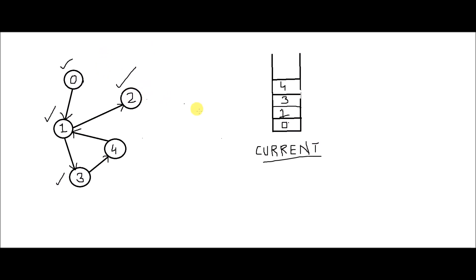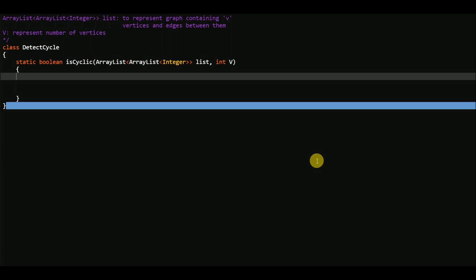I'll be using two arrays: one to keep track of visited nodes and the other to keep track of the current recursive stack. That is how we are going to detect cycles. Let's just code it now.